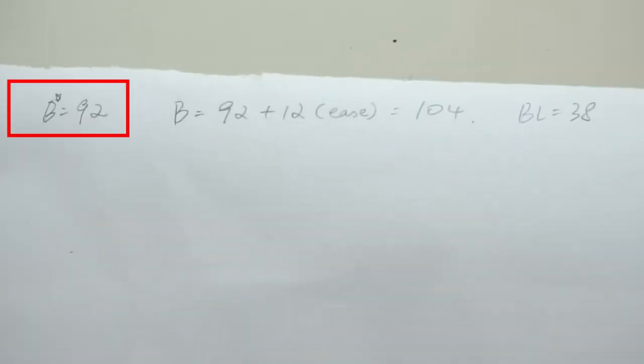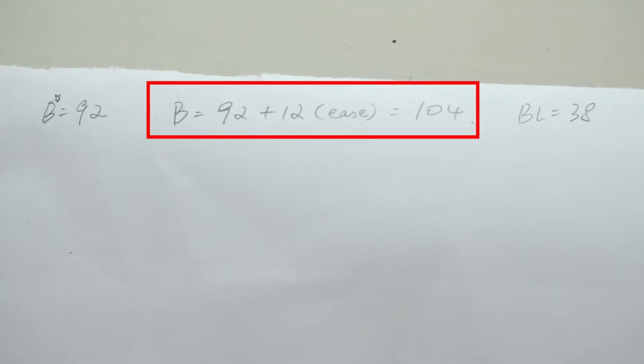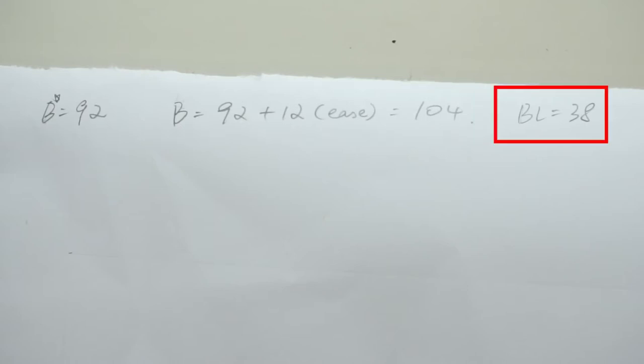You will only need three measurements for the bodice. The first one is your bust measurement, which we'll label B star. The second one is your bust adding 12cm of ease, which we will call B. And the last one is your back length, which is the distance from the back of your neck to your waist. For myself, I'm of 158cm height, it's about 38cm just for a reference.